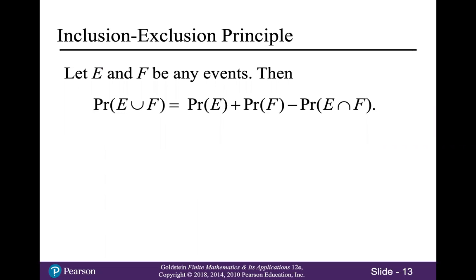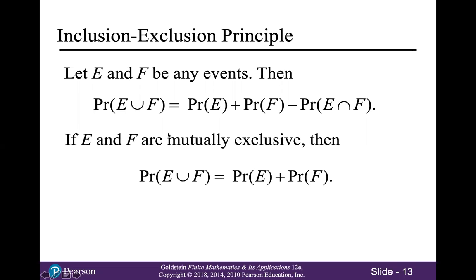Next is the inclusion-exclusion principle, which is similar to what we had in Chapter 5 for sets. Remember that if two events are mutually exclusive, that means those two events have no outcomes in common, in which case the probability of E intersect F would be 0 because E intersect F would be the empty set. So in that case, the formula simplifies to: the probability of E union F is equal to the probability of E plus the probability of F.